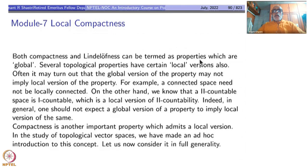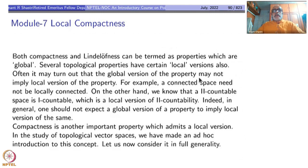Both compactness and Lindelöfness can be termed as properties which are global. Several topological properties have certain local versions also. Often it may turn out that the global version of a property may not imply the local version. For example, there is connected space and also locally connected space — connectedness need not imply local connectedness, as we have seen.